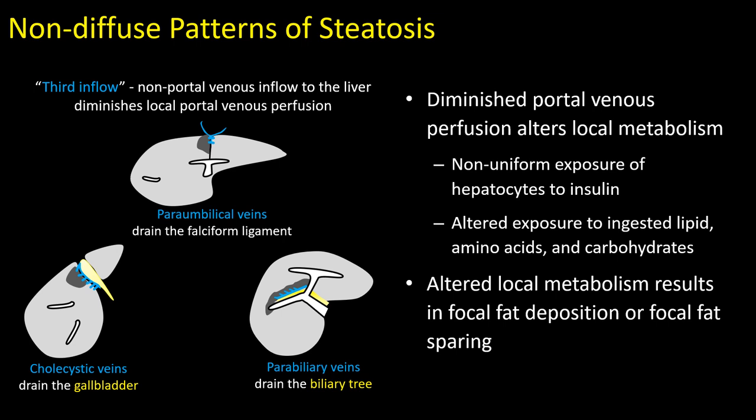Because areas receiving predominantly third inflow rather than portal flow don't see those same metabolically active factors — including ingested lipids, amino acids, and carbohydrates — their metabolism is altered. This can result in either focal fat deposition, most commonly seen along the falciform ligament due to periumbilical veins, or focal fatty sparing, most commonly seen along the gallbladder fossa related to the cholecystic veins.